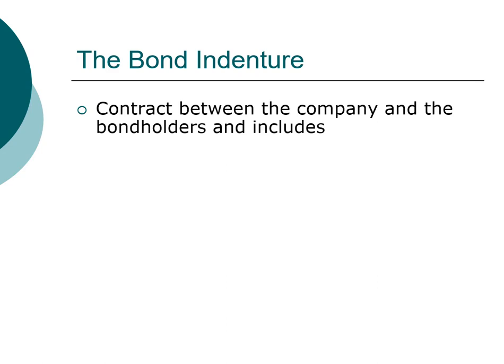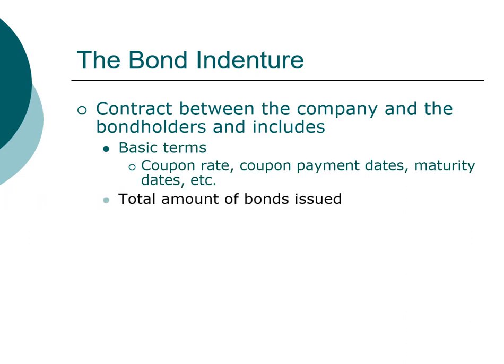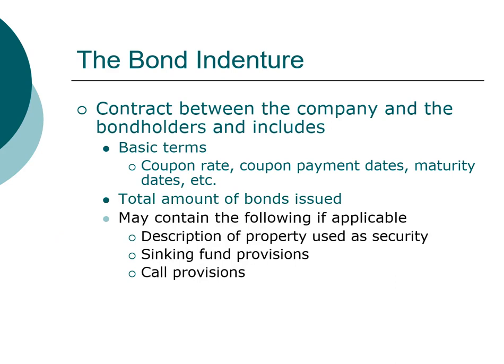The bond indenture is the contract between the company and the bondholders. This contract is important because it lays out all the important characteristics of the bond — the coupon rate, the coupon payment date, face value, maturity, and so forth. It also tells you how much money the company has borrowed all at once, which is the total amount of bonds issued.